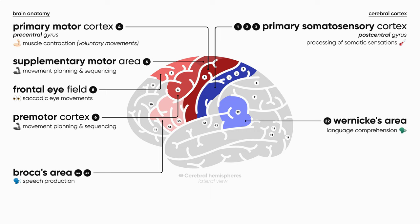Anteriorly to all these areas, we have the prefrontal cortex. It is responsible for such complex higher functions as cognition, learning, working memory, decision making, various aspects of personality, social behavior, and so on. It is also partially involved in motor planning. In evolutionary terms, this is the newest and the most complex cortical area.